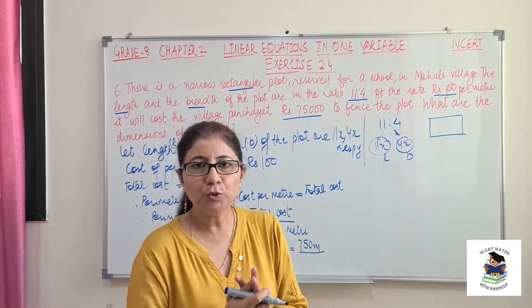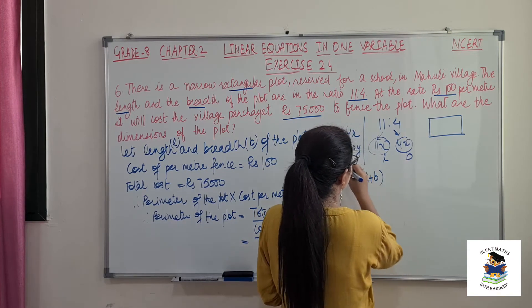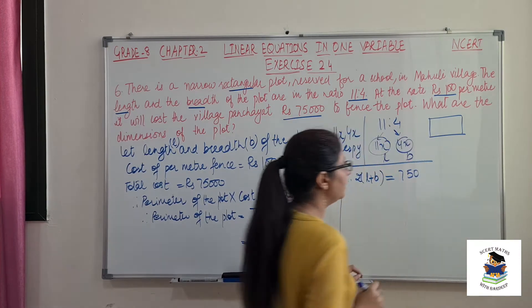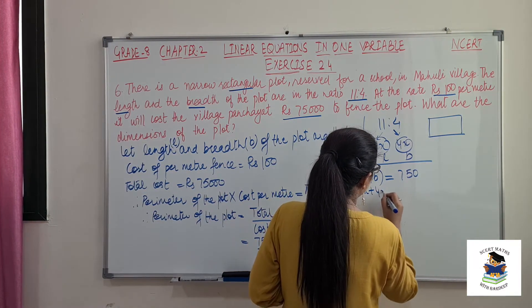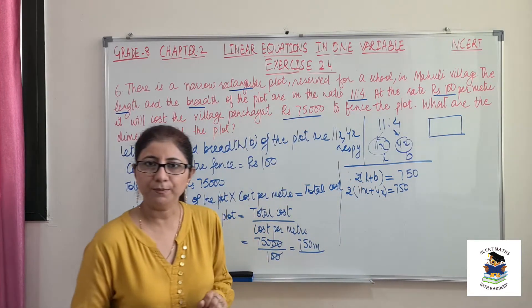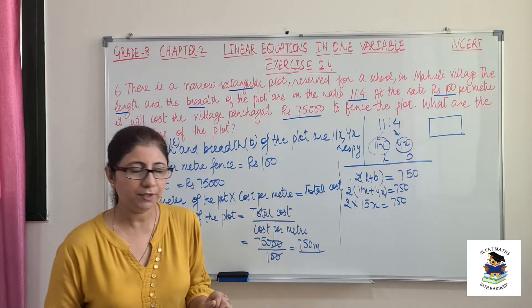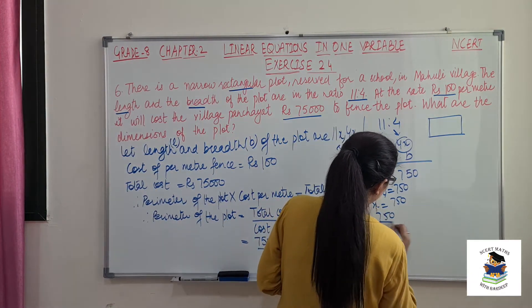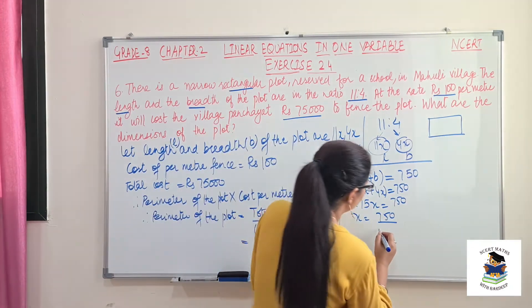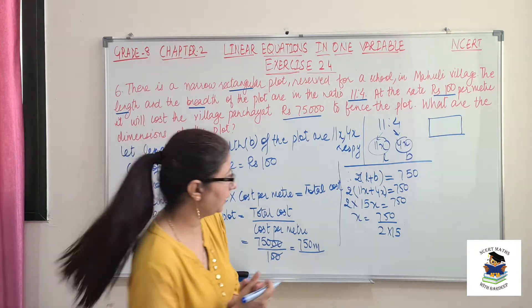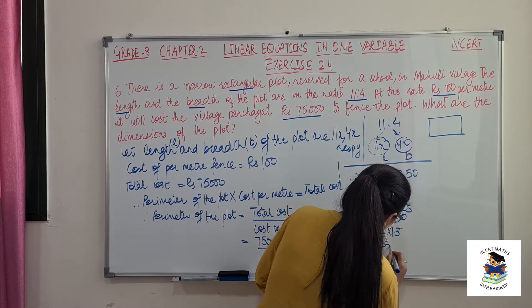The perimeter of a rectangle is 2 times (L plus B). So we write: 2 times (11x plus 4x) equals 750. That gives 2 times 15x equals 750. Solving for x: x equals 750 divided by 2 into 15, so x equals 25.